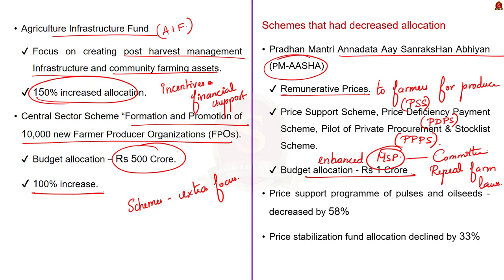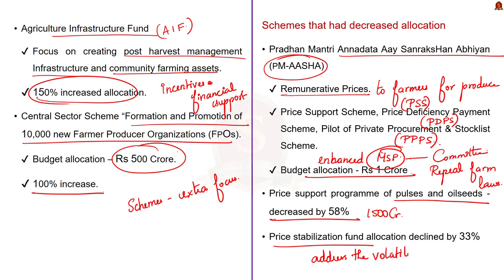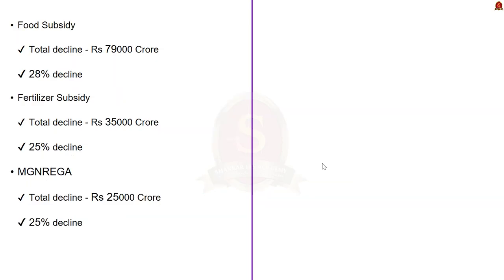In addition to PM-ASHA, other output price support schemes also received declined budgetary allocation. The allocation for the price support program of pulses and oil seeds has reduced by 58% — that is 1500 crore. The allocation for the Price Stabilization Fund, meant to address extreme volatility in prices of perishables, also declined by 750 crore — a 33% reduction. The budgetary allocation for fertilizer subsidy received a decline of 35,000 crore, which is a 25% decline, and food subsidy saw a decline of 79,000 crore — a 28% decline.